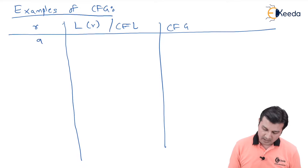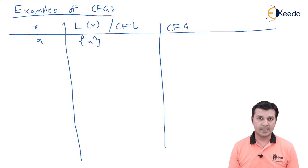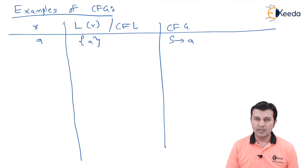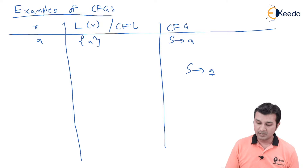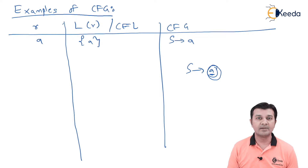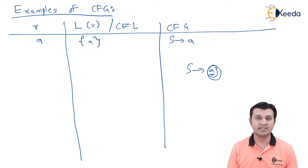The first regular expression is simply 'a'. We know the language consists of only 'a'. The grammar production for this is: S → a, where S is the start variable. Since 'a' is a terminal, the derivation cannot go further — that is the end of the production.